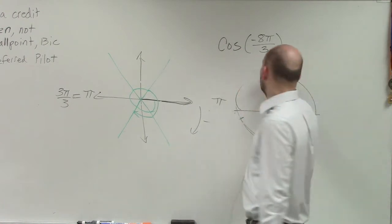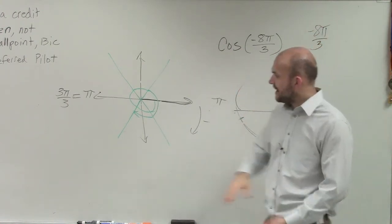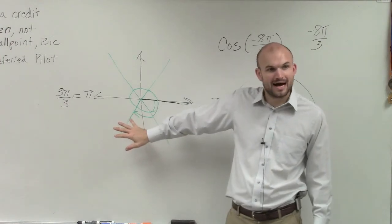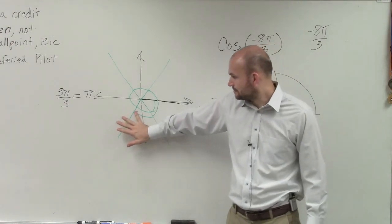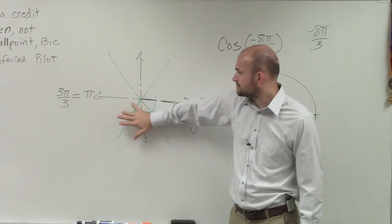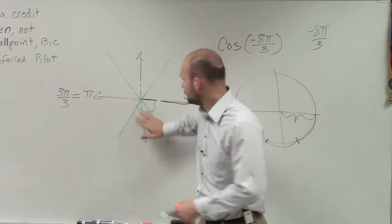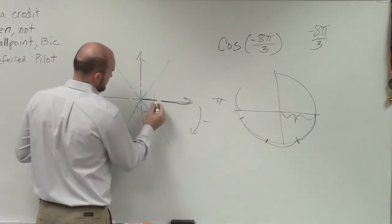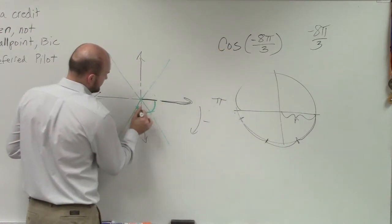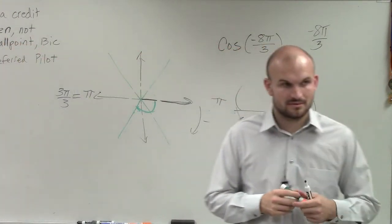So let's take the point negative 8π over 3. If I add 2π to that, that's pretty much like me taking away one revolution. Then I'm only left with this angle, right?